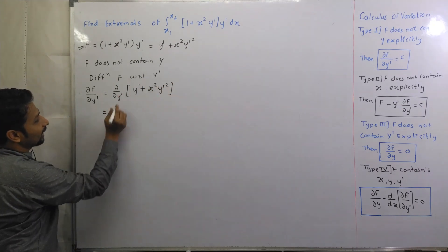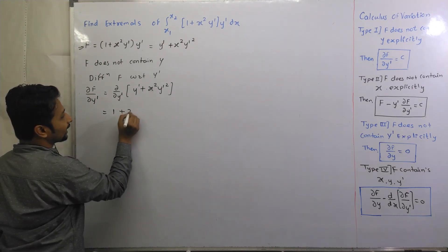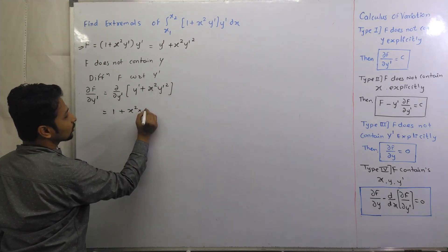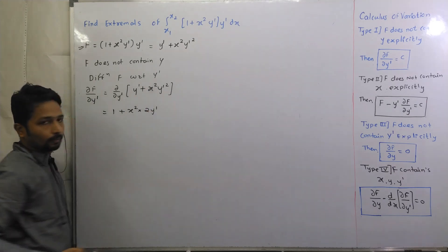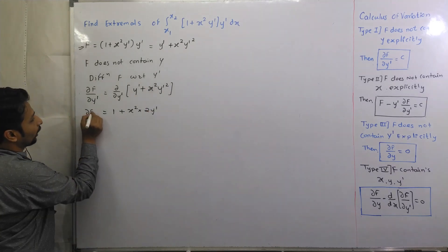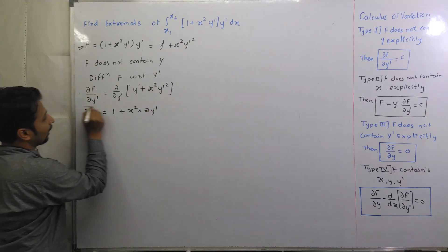So y dash at any rate you have got 1 plus x square as it is and y dash square you have got 2 y dash. So here we have do f by do y dash are answer.